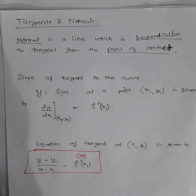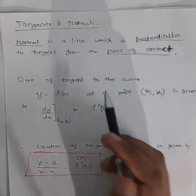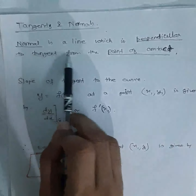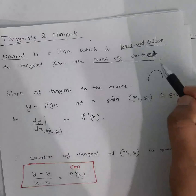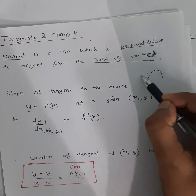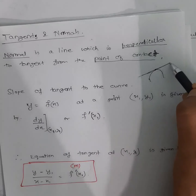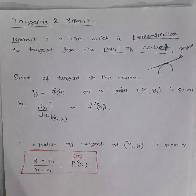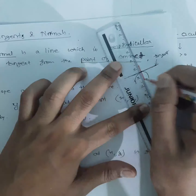The next topic is tangent and normal. You already know what a tangent is, and you know that the derivative is the slope of the tangent. Now, what is a normal? A normal is a line which is perpendicular to the tangent from the point of contact. If I draw a curve and mark a point of contact with a tangent, then the normal will be the perpendicular line to that tangent at that point.